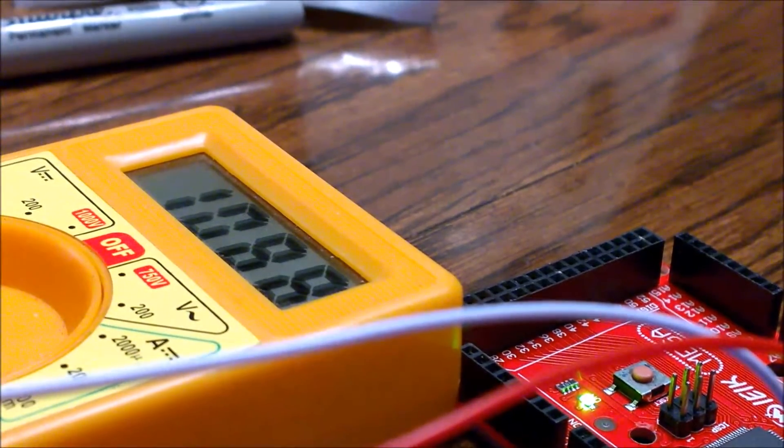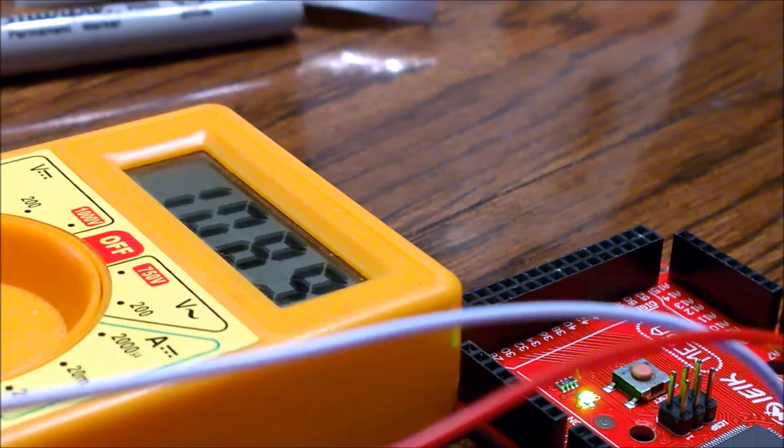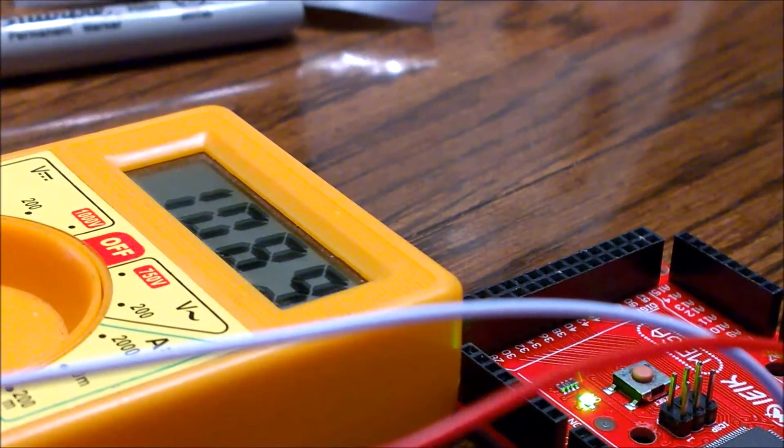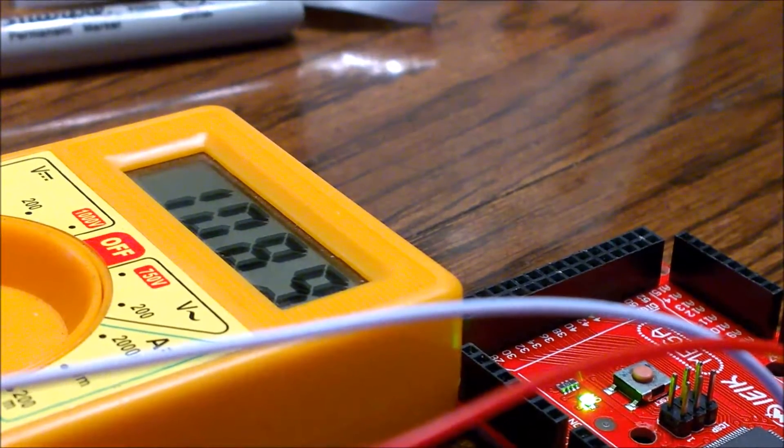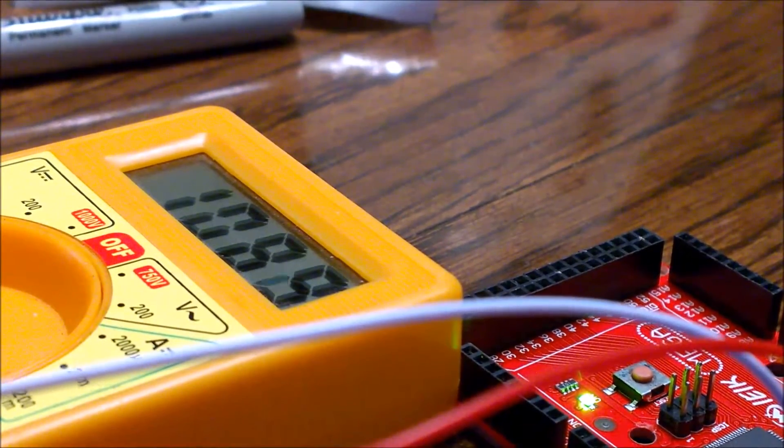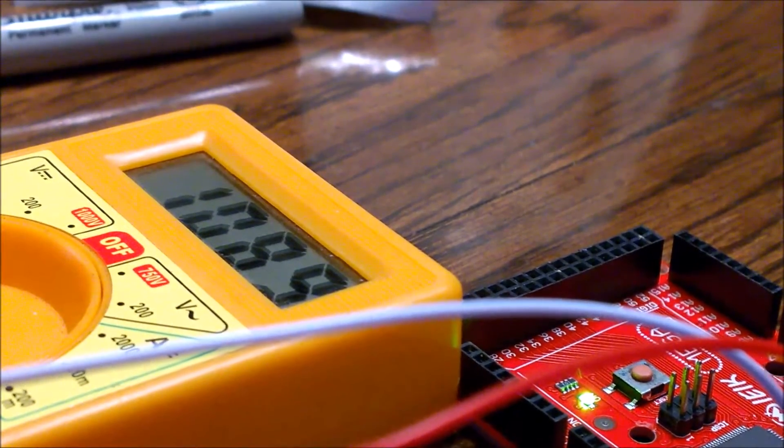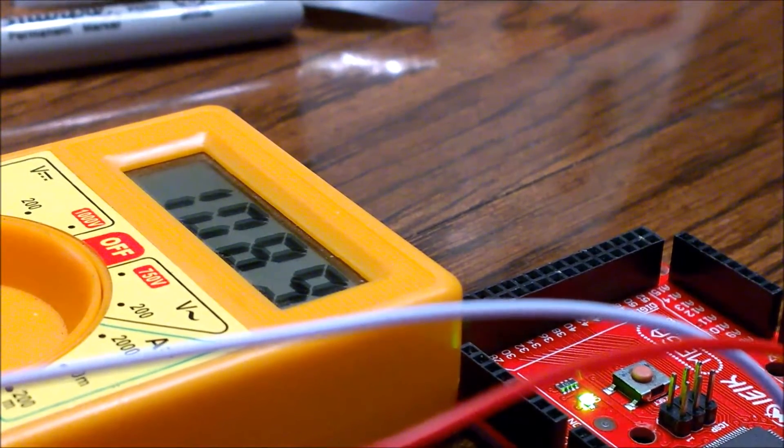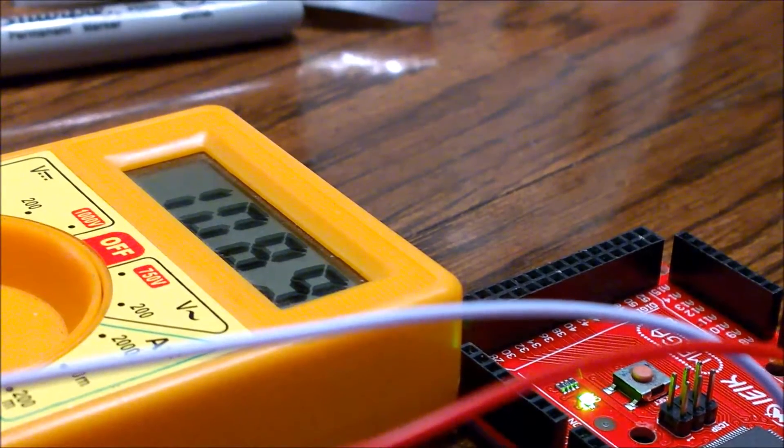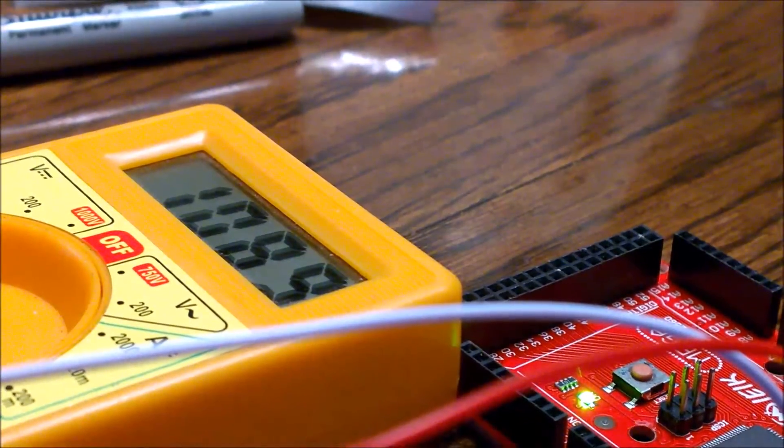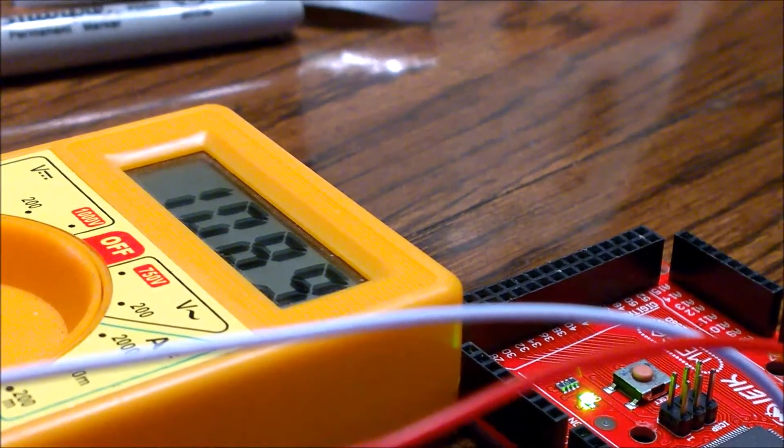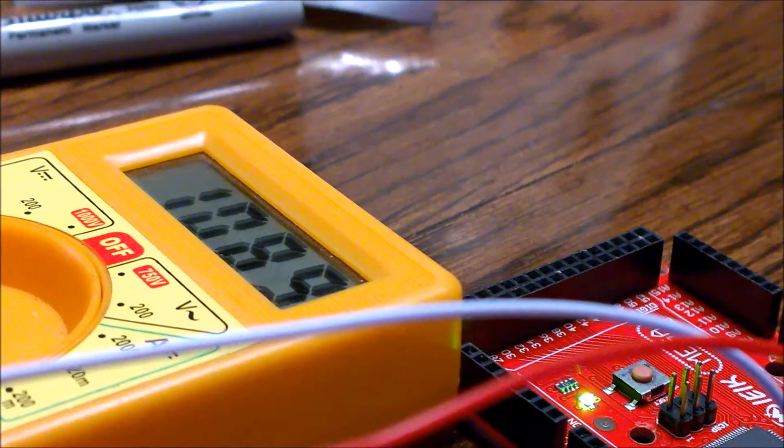So as it should be clear, the internal reference voltage when I say 1.1 volt, it is not exactly 1.1 volt but it can be somewhere between 1 volt and 1.2 volt. So it is actually necessary to measure what this exact voltage is in order to utilize its true functionality. Now let us see what happens if I change in my code this internal reference 1.1 to 2.56 volt.